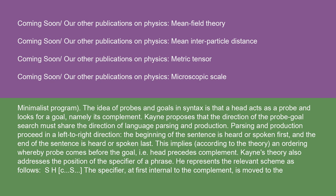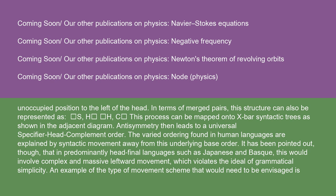Kayne's theory also addresses the position of the specifier of a phrase, representing the relevant scheme as S-H-C-S. The specifier, at first internal to the complement, is moved to the unoccupied position to the left of the head. In terms of merged pairs, this structure can also be represented as S-H-H-C. This process can be mapped onto X-bar syntactic trees. Antisymmetry then leads to a universal specifier-head-complement order. The varied ordering found in human languages is explained by syntactic movement away from this underlying base order.